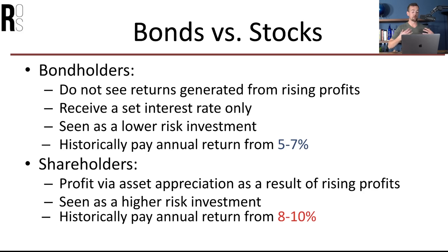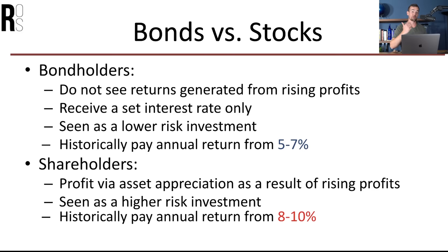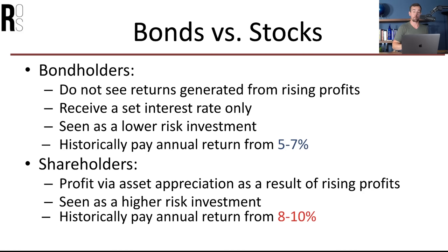Shareholders, on the other hand, profit via asset appreciation — the price of a share going up as a result of rising profits. Shareholders can also earn money through dividends, which are just regular cash payments sent to shareholders. They're seen as a higher risk investment because rather than just loaning the company money, you're taking on a portion of their assets and liabilities because you're an owner. You're also last to be paid in a bankruptcy situation. However, because you are taking on more risk, they historically pay an annual return of around 8% to 10%.